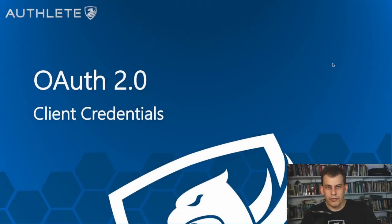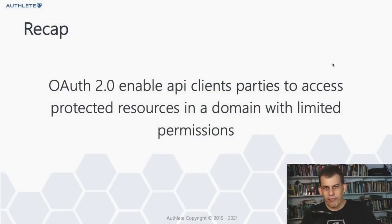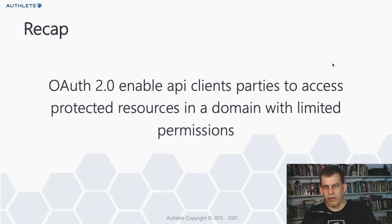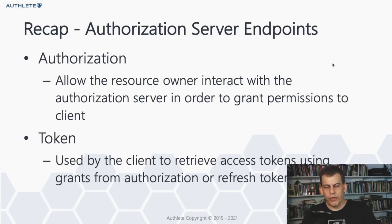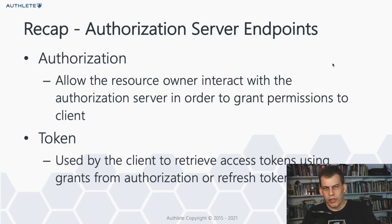Let's recap the concept of OAuth 2.0: it allows the API client to access protected resources on behalf of a resource owner, where the resource owner grants restricted or limited permissions to the client. OAuth 2.0 requires the authorization server to implement two endpoints: the authorization endpoint used by the resource owner to interact with the AS and grant access, and the token endpoint used by the client to retrieve an access token.